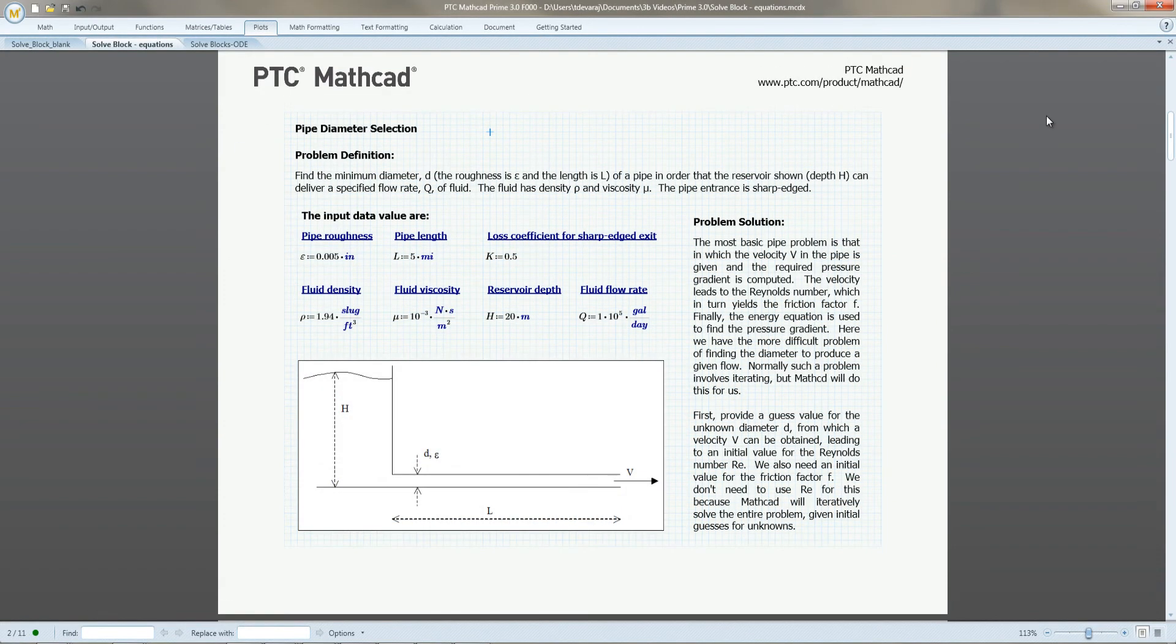Now, let's look at a real-world problem. We want to find the minimum pipe diameter in a reservoir to deliver a specified rate of flow. We need to account for pipe length and roughness, flow rate, reservoir depth, and fluid properties.